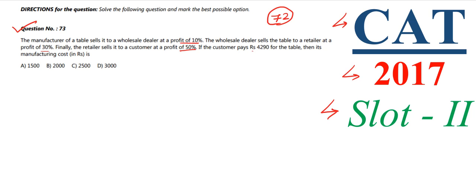If the customer pays rupees 4290 for the table, we need to find its manufacturing cost. The cost price for the customer is 4290, which is also equal to the selling price of the retailer.